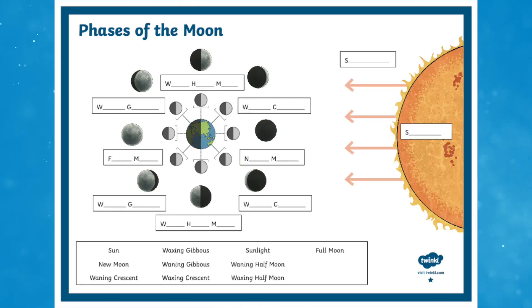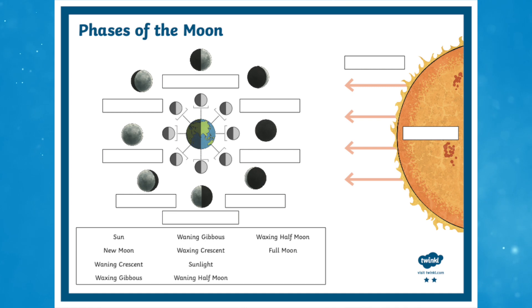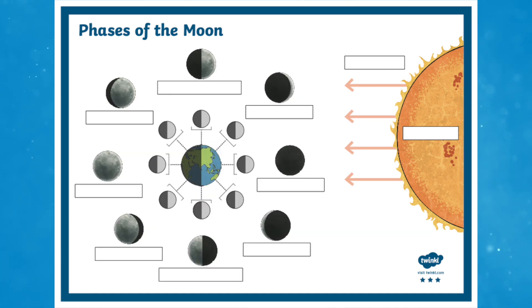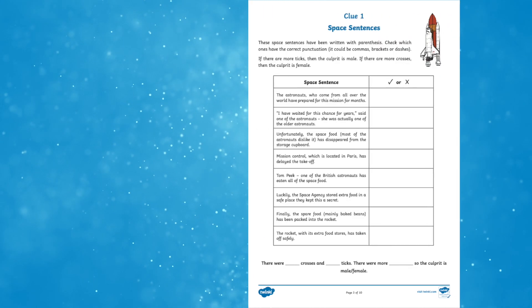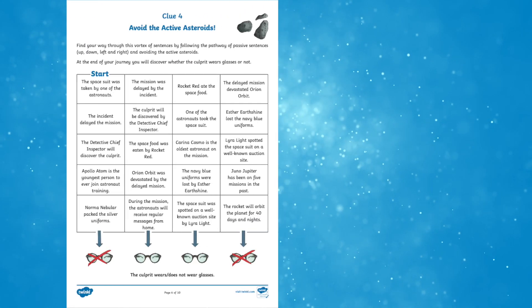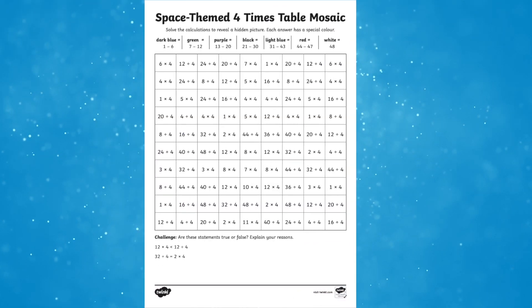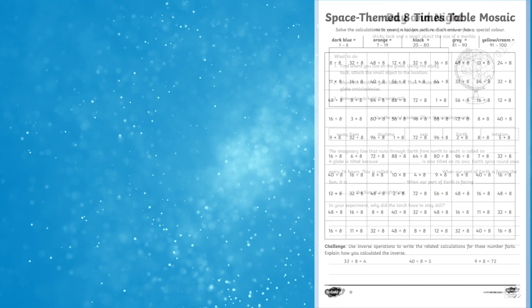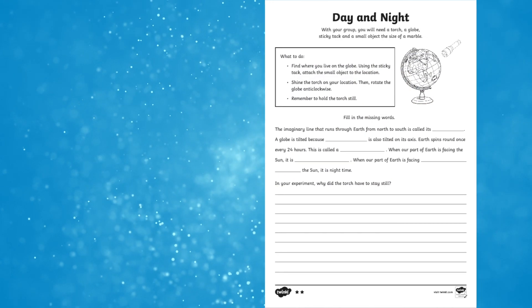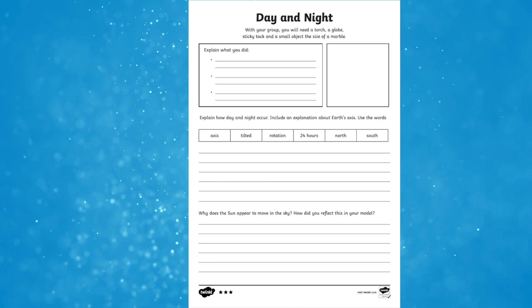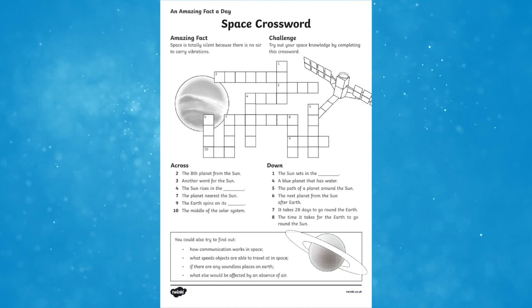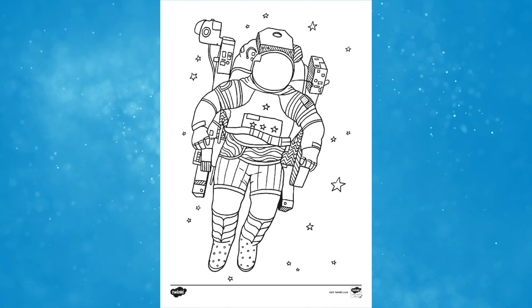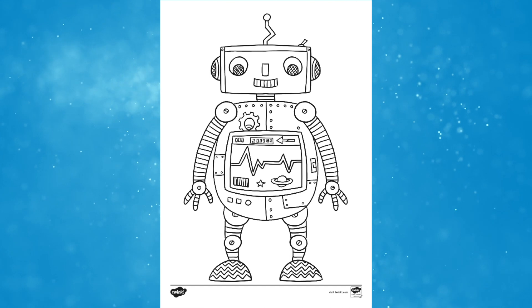Children can also label the phases of the moon with the phases of the moon labelling worksheet included in the pack. The pack also includes many exciting cross-curricular space resources such as a SPAG mystery of the stolen space suit, space themed times tables mosaic colouring worksheets, other science resources such as a day and night worksheet, the solar system fact hunt activity, a space crossword, and fun space themed mindfulness colouring pages.